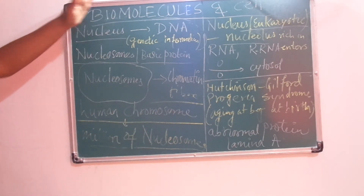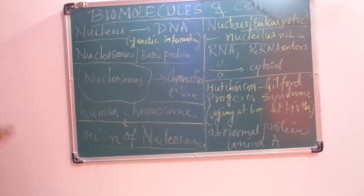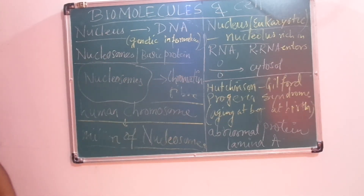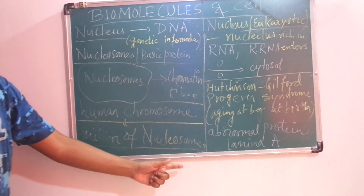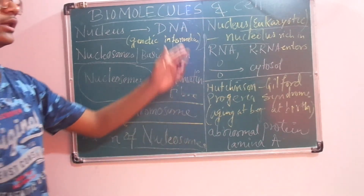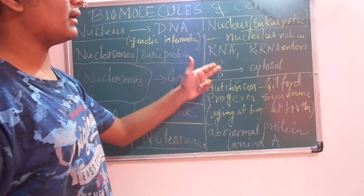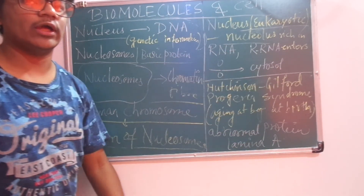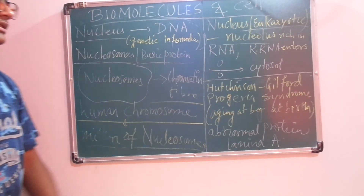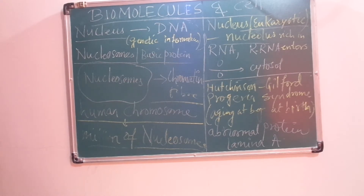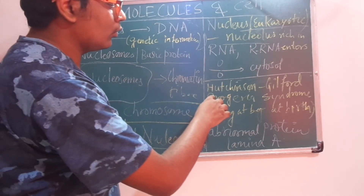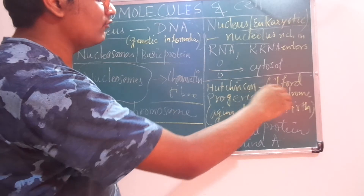To summarize the nucleus-related terms: we have the nucleus itself, nucleosomes, chromatin fiber formed from their assembly, millions of nucleosomes per chromosome, the nucleolus term, and the nucleoplasm — all of these are now completed.